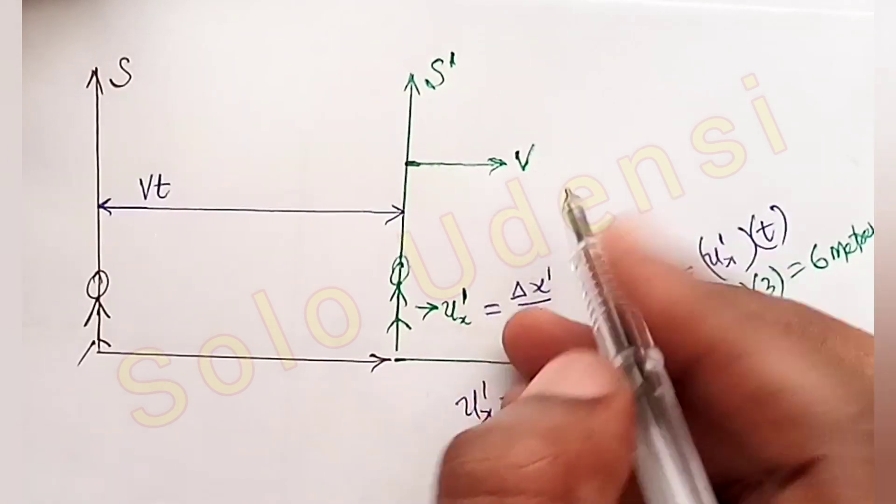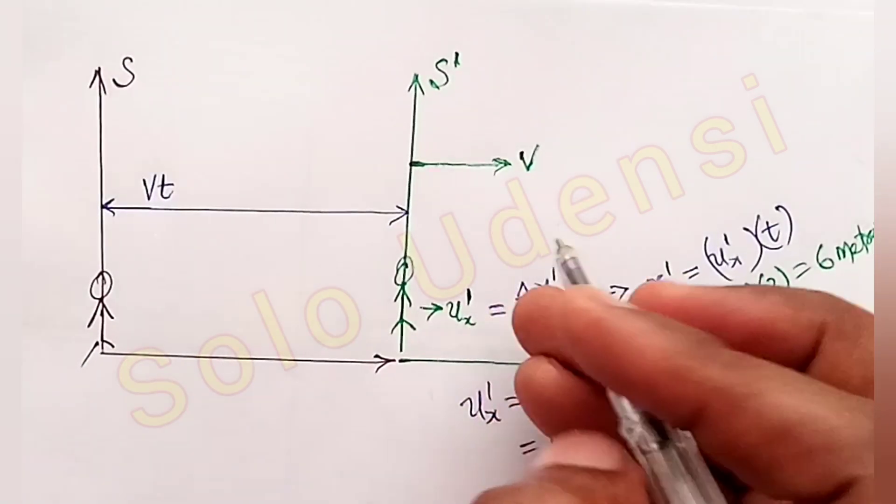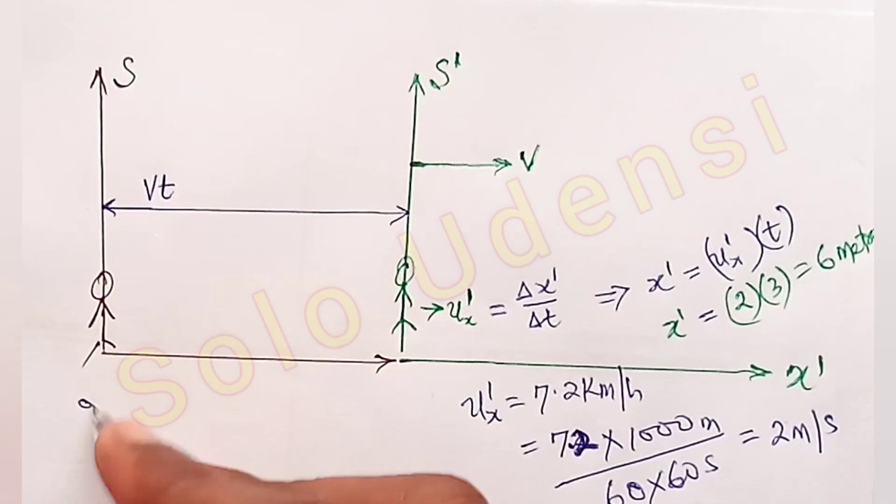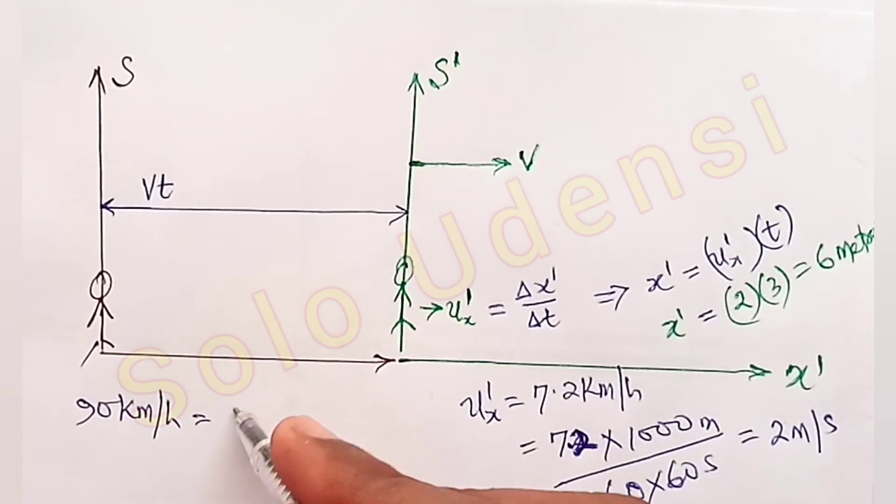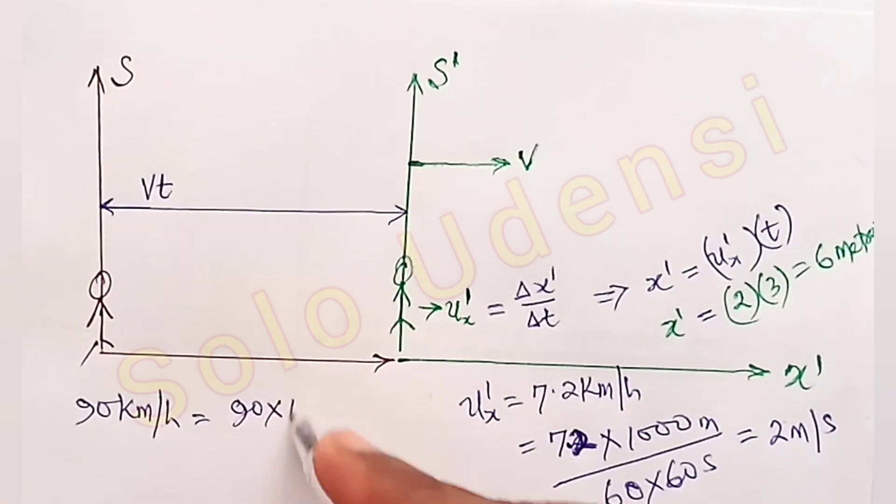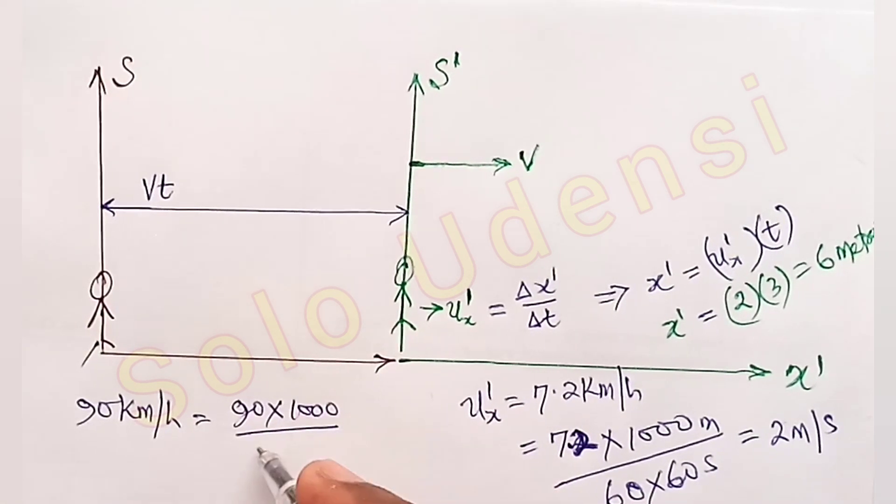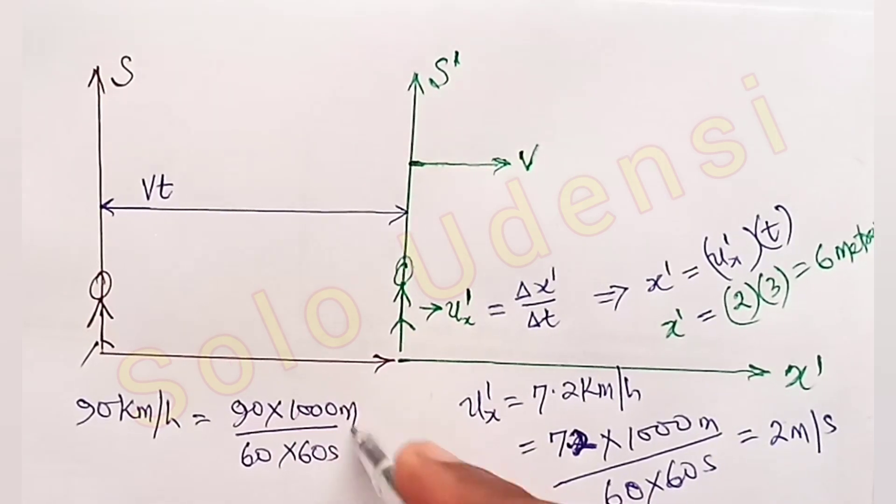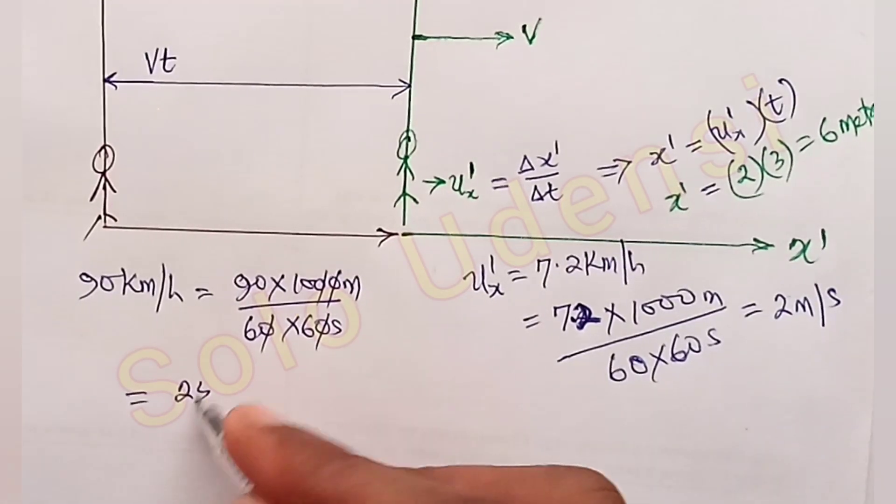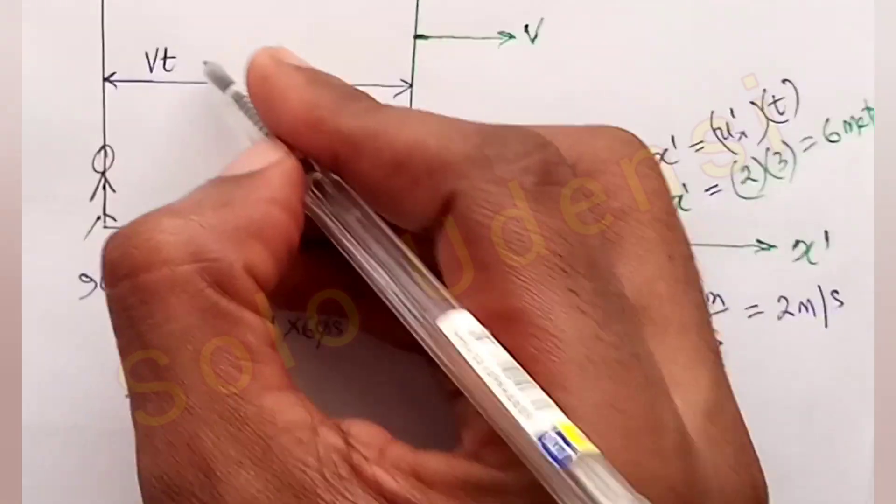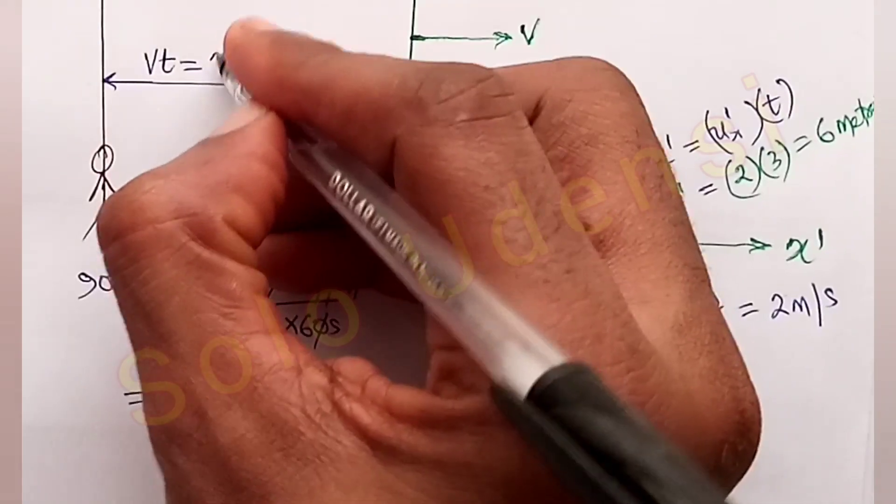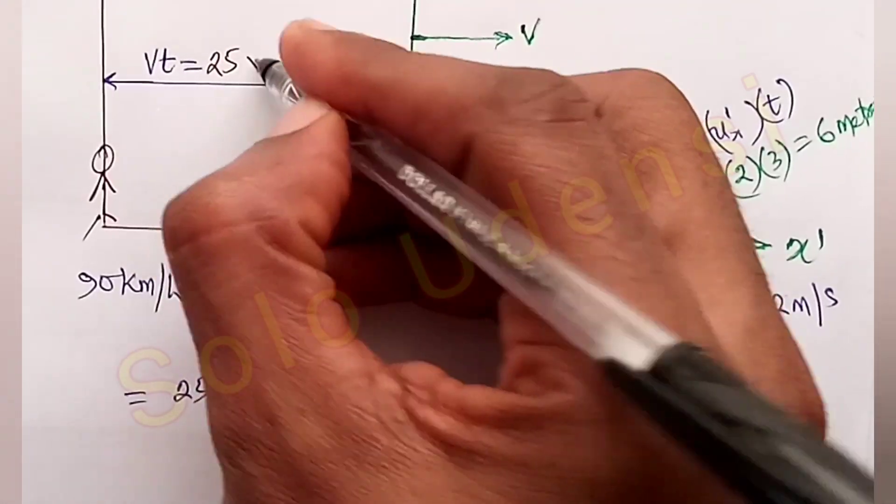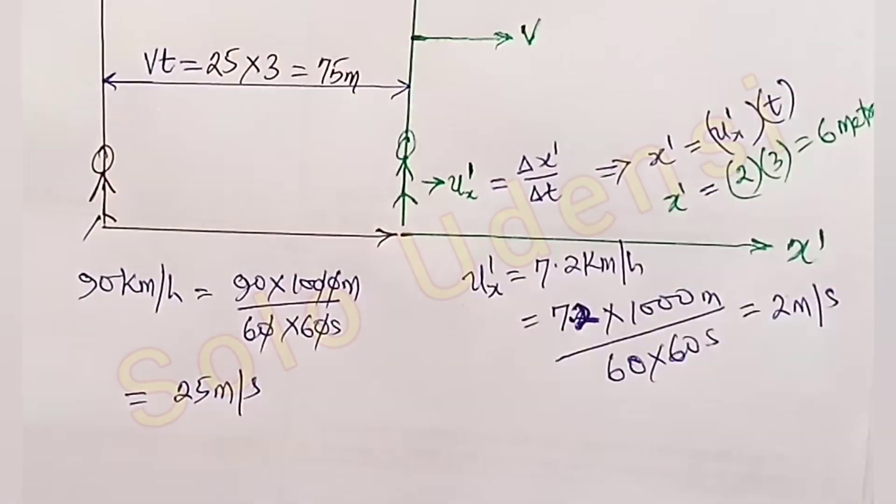And the velocity of this moving bus is 90 km per hour. 90 km per hour is equal to 90 times 1,000 over 60 times 60 seconds, which is 25 meters per second. So this is equal to 25 times 3 seconds, which is 75 meters.